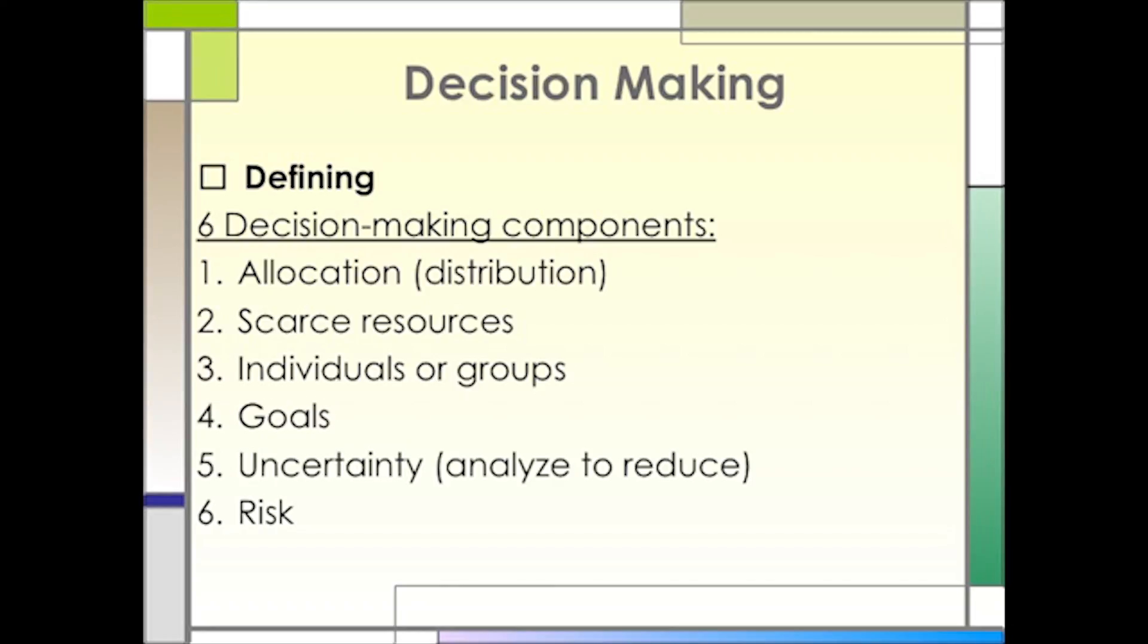There are six components to decision-making that must be considered. Number one, allocation or distribution. Who needs it most, and where is it most critical? Number two, again, resources can be scarce. If we had unlimited resources, no problem. But that is hardly ever the case.